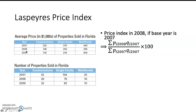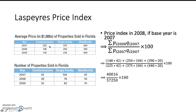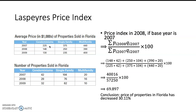Plugging in the numbers, we have the prices in 2008 and the quantities in the base year. Another piece of information we use is the price in the base year. Plugging all the numbers in, we get the result of 69.897. This result shows that the price of properties in Florida decreased by 30.11% in 2008 compared to the base year of 2007.